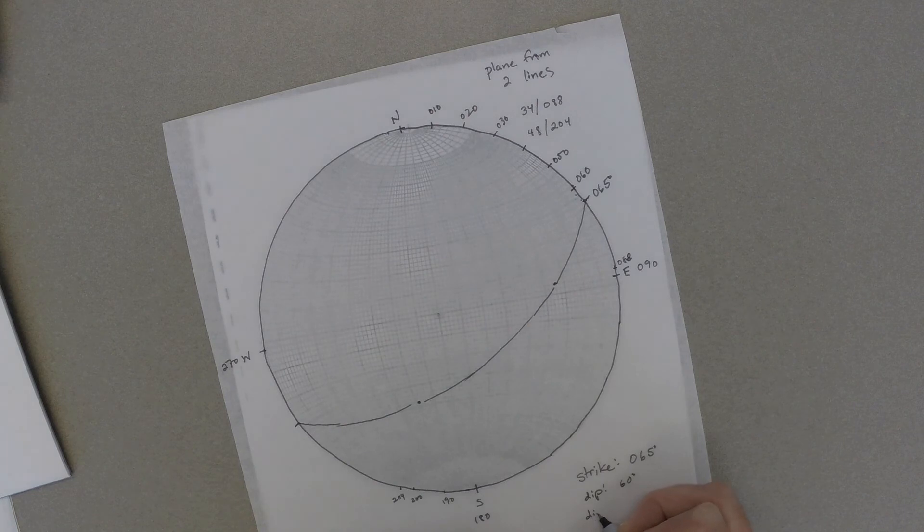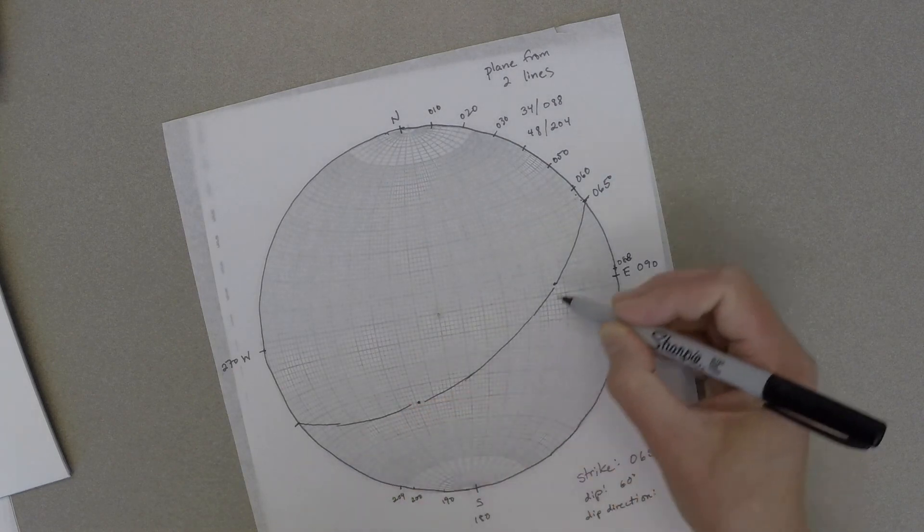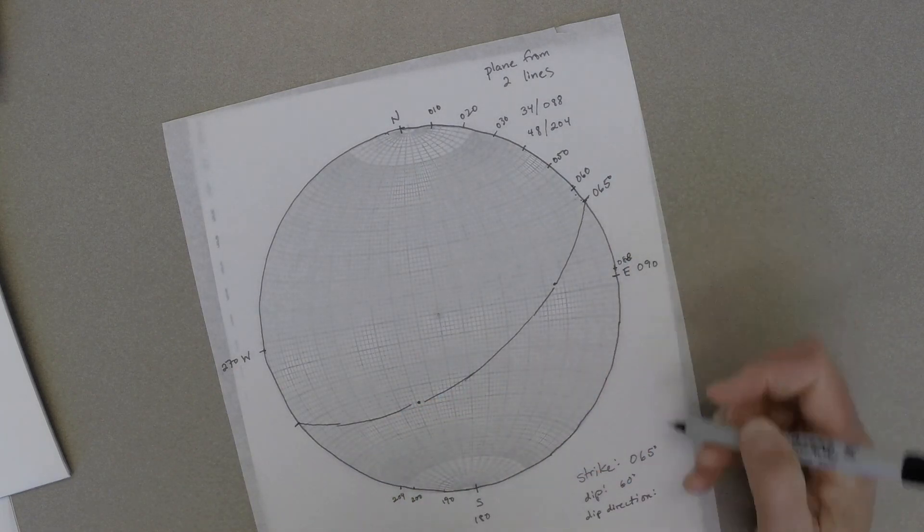And then we also want to know the dip direction to completely define the orientation of our plane. The dip direction is the direction in which that great circle bulges. In this case, it bulges down towards the southeast, so our dip direction is towards the southeast.